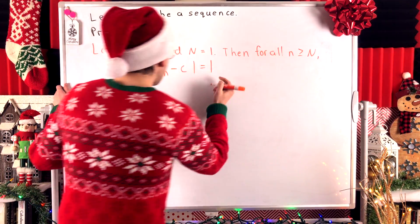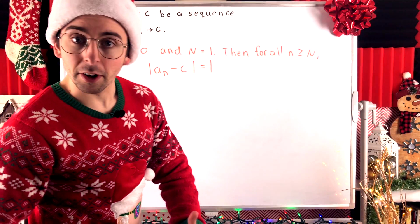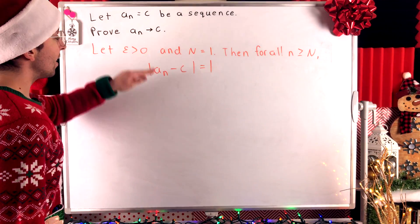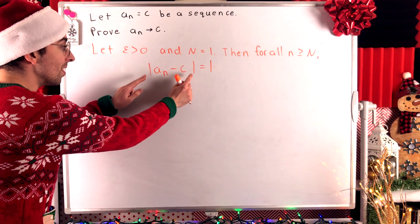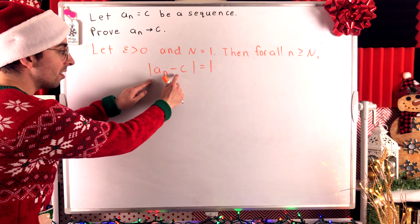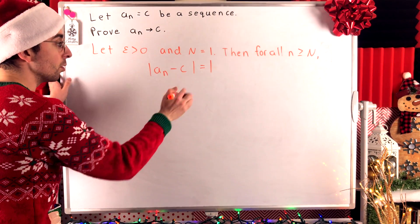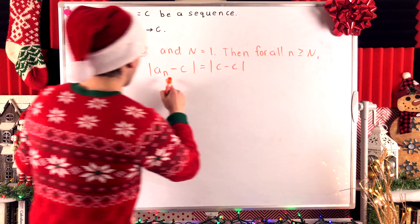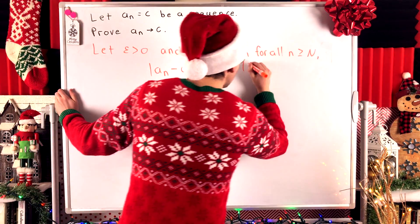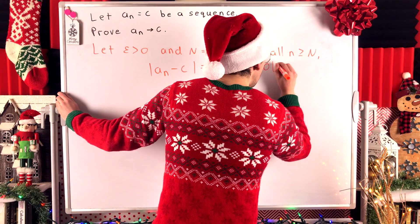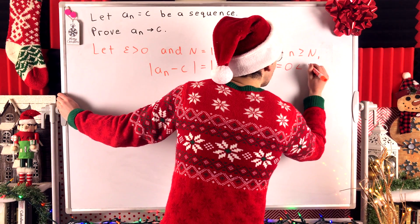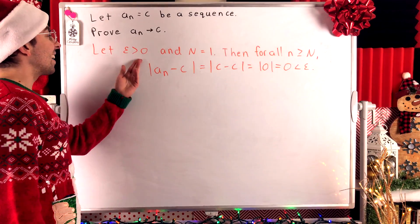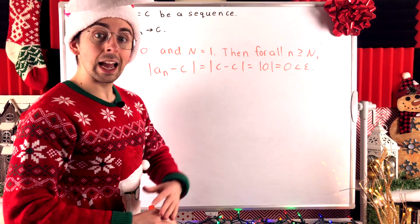All we have to do is substitute in what a term of our sequence looks like. By definition, every term of our sequence is equal to C. So the distance between a term of our sequence and C — that's the absolute value of a_n minus C — is the absolute value of C minus C, which is the absolute value of zero, which is zero, which of course is less than epsilon because epsilon was taken to be greater than zero.